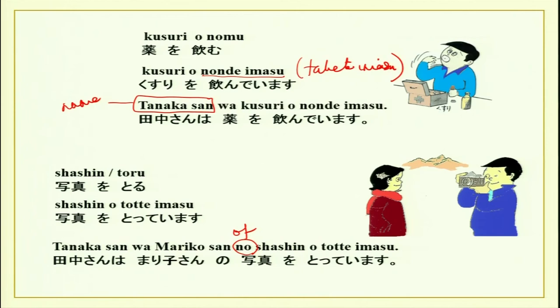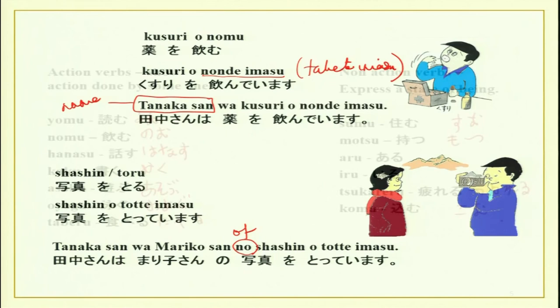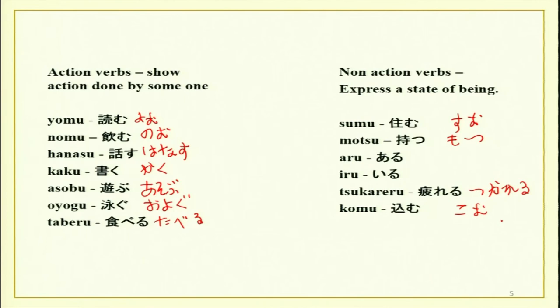We can also use non-action verbs with te imasu. Remember we discussed action and non-action verbs at the beginning. Action verbs show that the subject is in a state or living that action. And the te form can also express the state resulting from an action — being in that state — or can show location at a certain point.